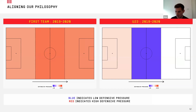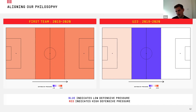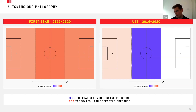What we have here are our pressing metrics at first team level and under-23s from last season. In these pitch visualizations, red indicates a high amount of defensive pressure and blue indicates a low amount. This simple visualization tells us that our first team presses more than our under-23s. It's not for me to say that's wrong — there are effective styles of play that don't involve high pressing — but you might question whether that is the best way to tactically align your different teams.